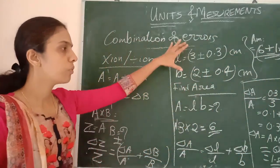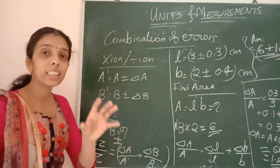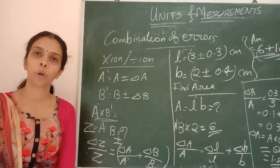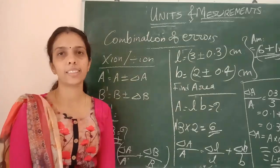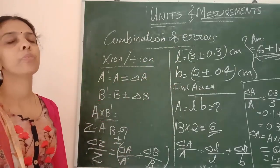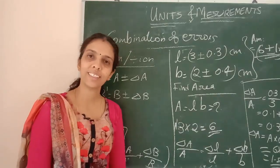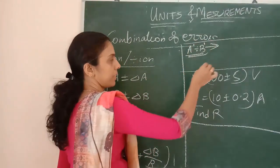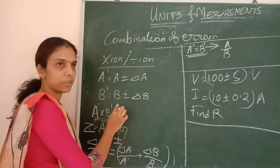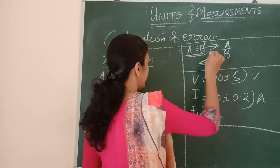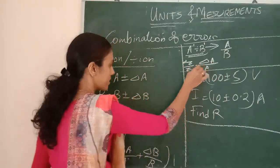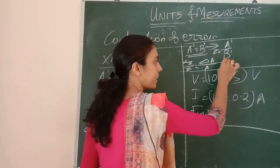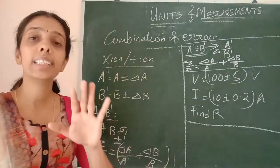So the relative error of the product will be equal to the sum of the relative errors of the multipliers. For division, if we find A divided by B — taking Z equals A dash divided by B dash — delta Z by Z equals delta A by A plus delta B by B. Here also the relative errors will add up.